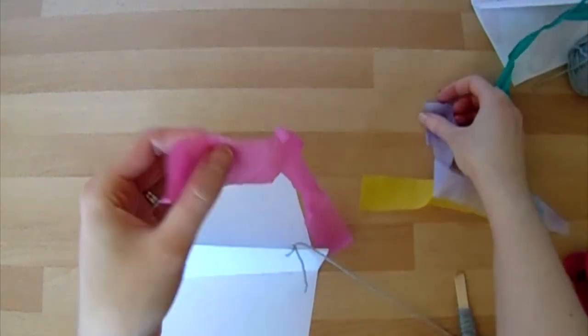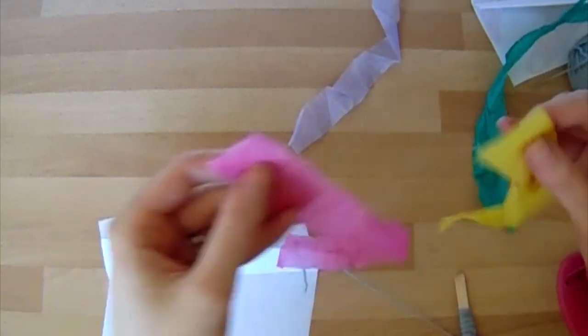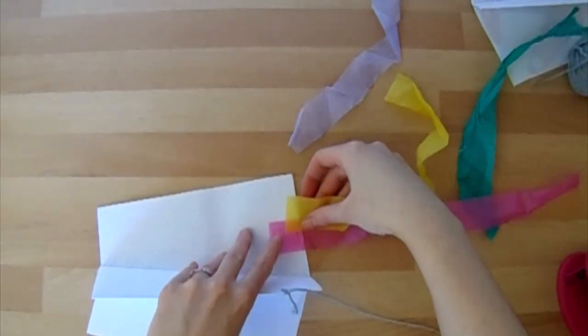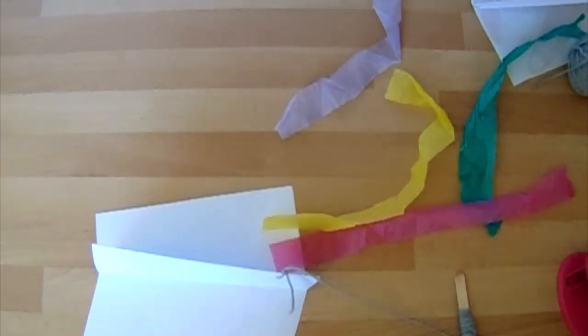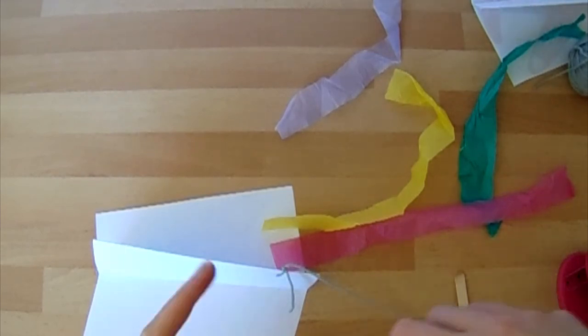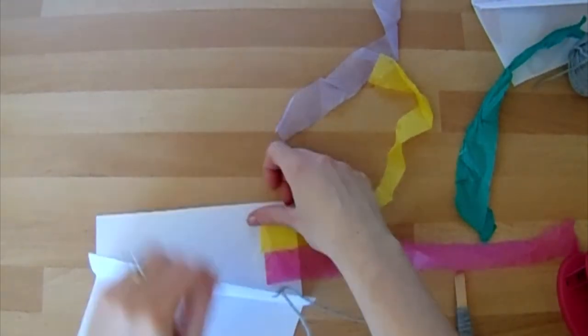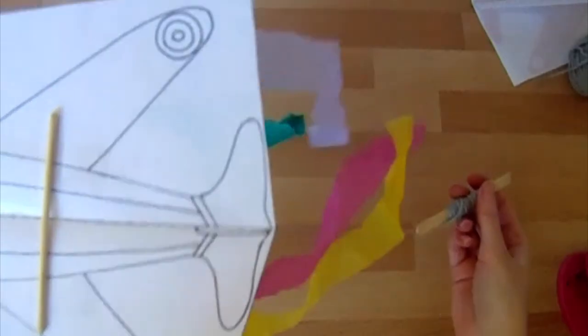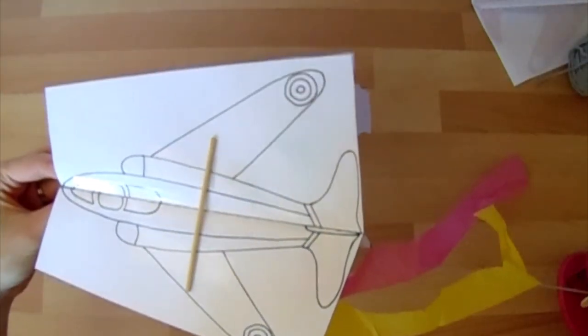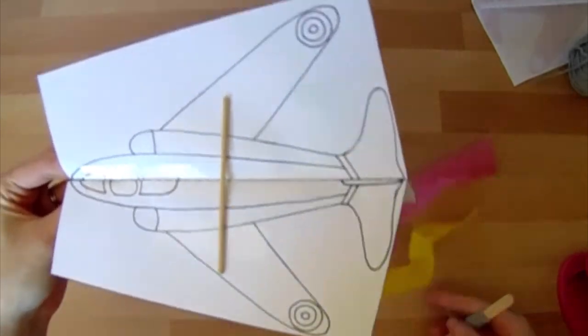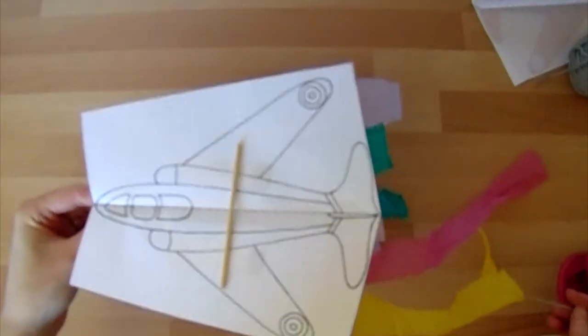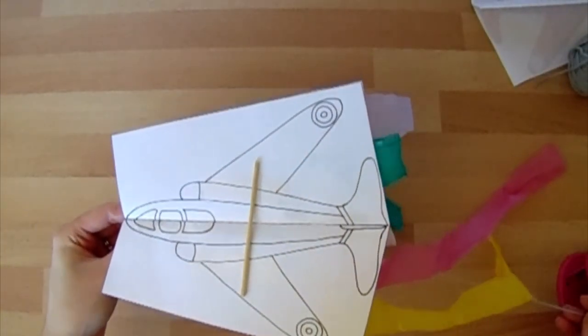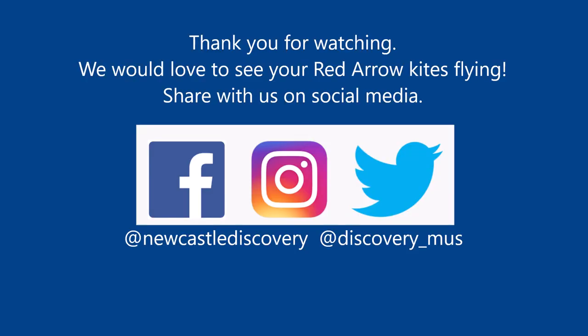I'm going to put two strips on each side with some sellotape to keep them in place. There we go. Our kite's now ready to test. Take it outside on a slightly gentle breeze day and you can fly your kite and see your red arrow flying up in the sky.